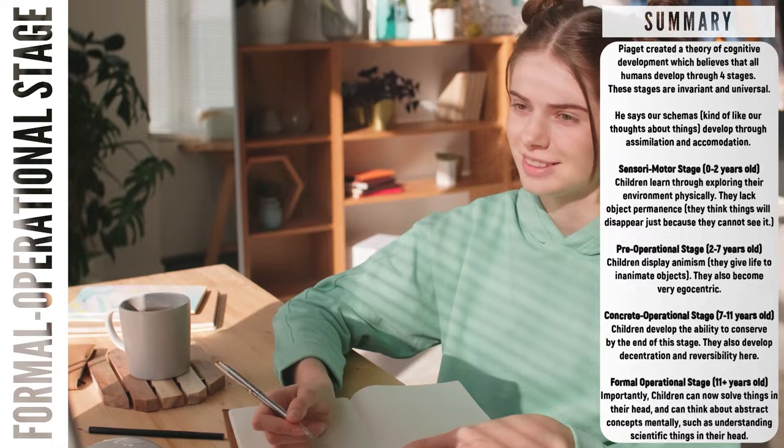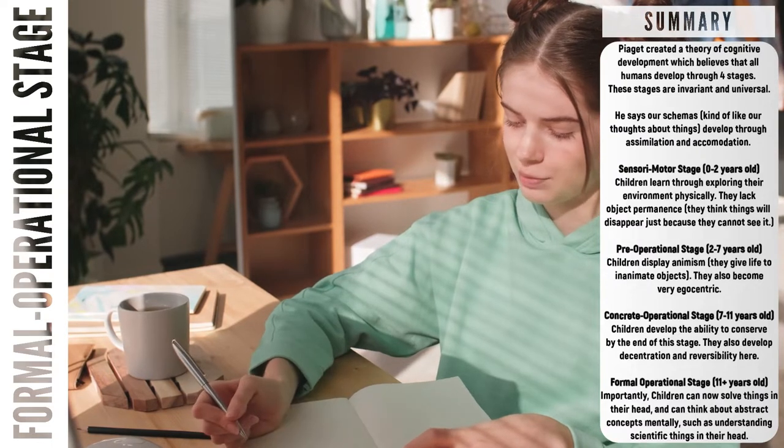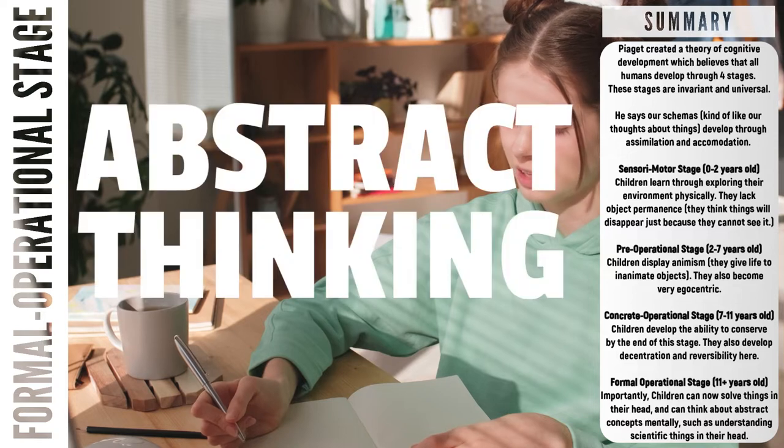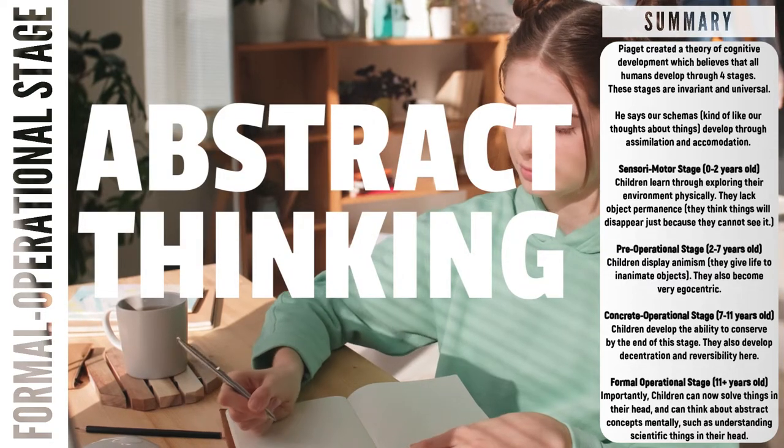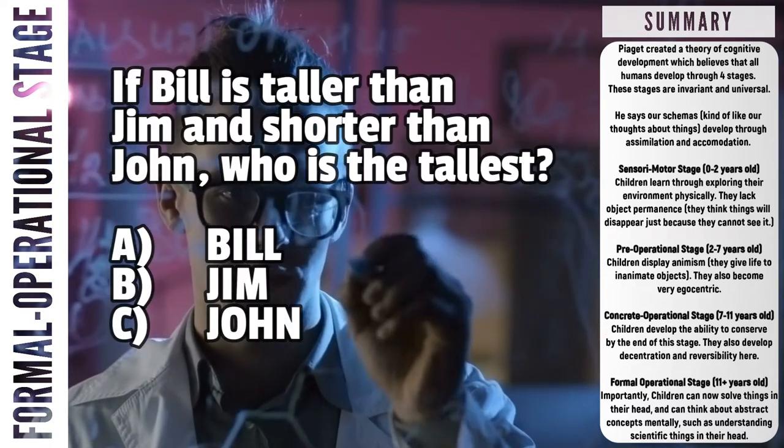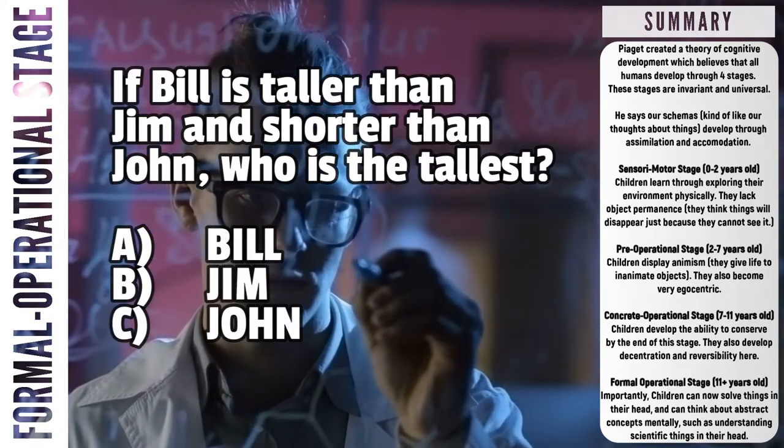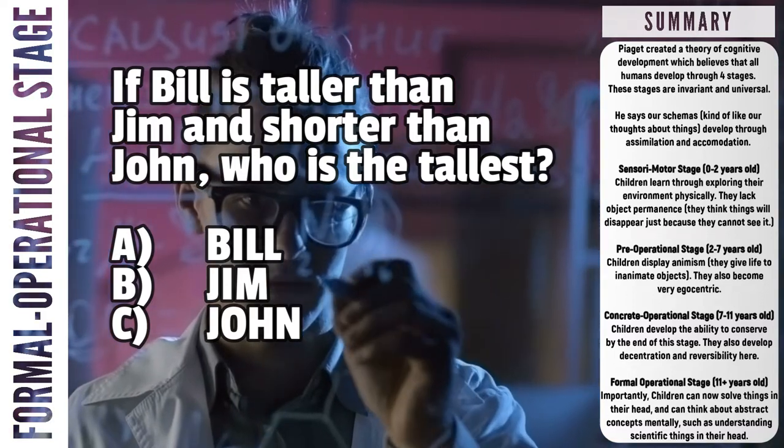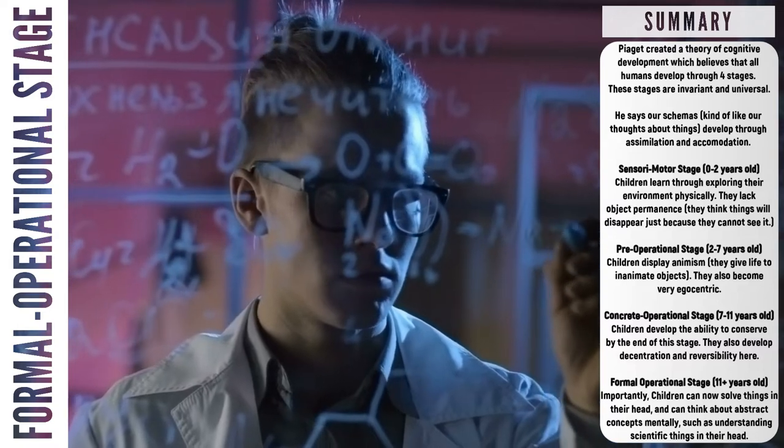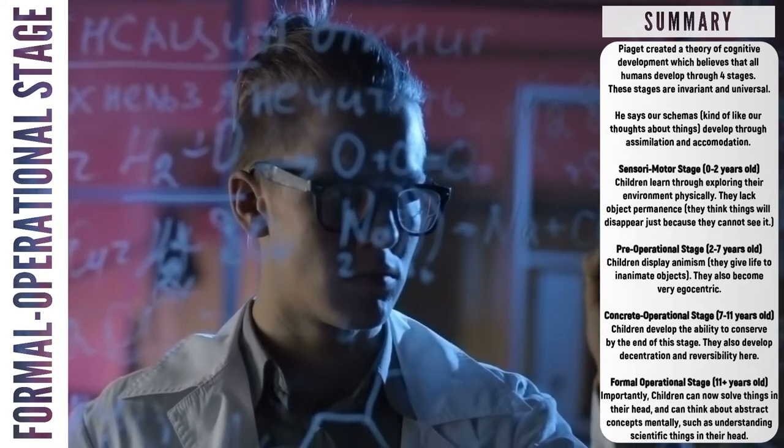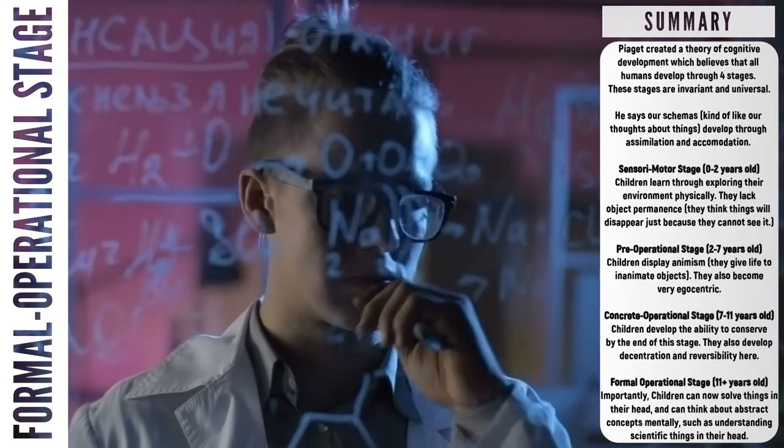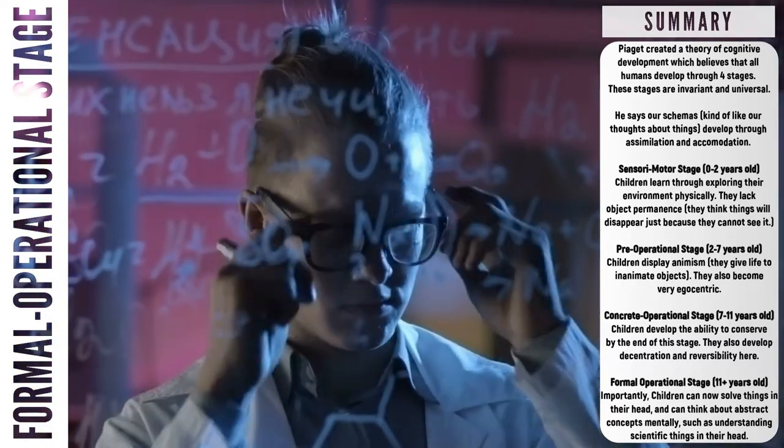Finally, we come to the formal operational stage, which happens from eleven years old onwards. In this stage, children start to use abstract thinking. That means you can think about more sophisticated and scientific concepts. For example, if Bill is taller than Jim and shorter than John, who is the tallest? Hopefully you'll get the answer of John, and this is because you're able to think about these things in your head without doing any trial and error. This is part of the abstract thinking you get in the formal operational stage. We've overcome egocentrism, we can conserve, and we've dealt with many of the problems in the previous stages.